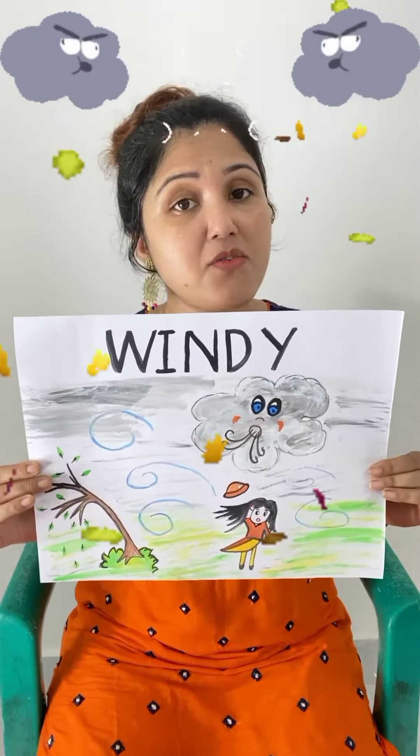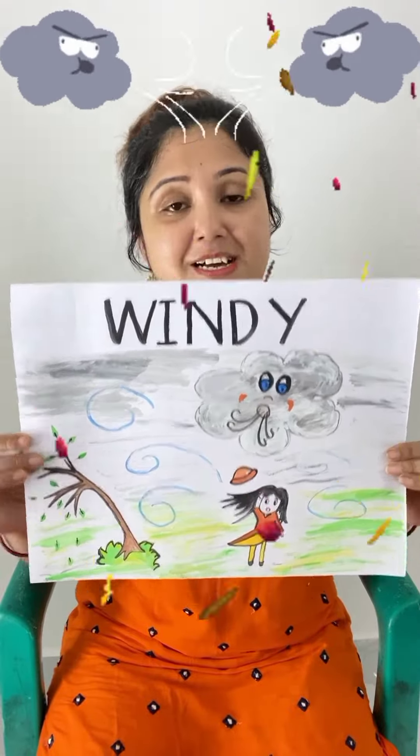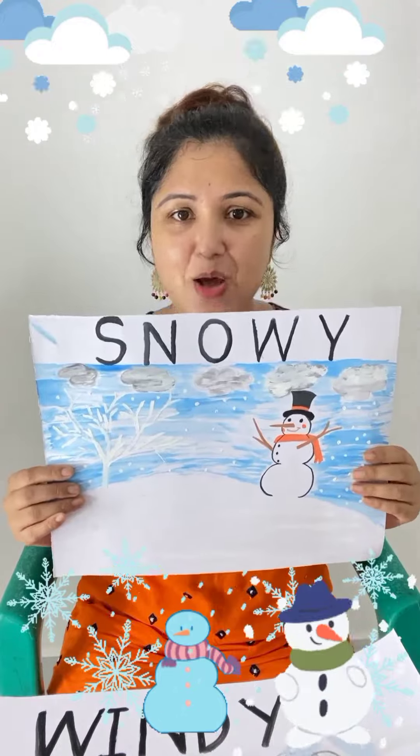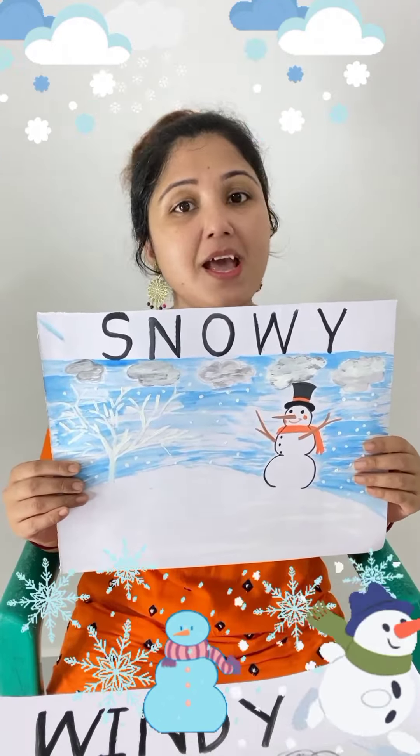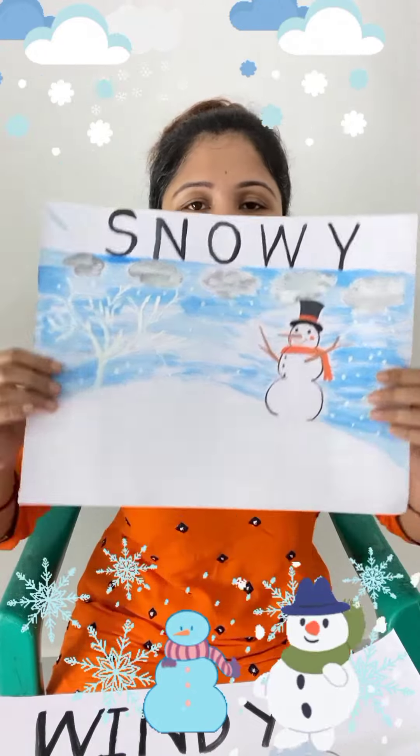Next is windy. What is the spelling of windy? W-I-N-D-Y, windy. Children, on a windy day, wind blows very fast and strong. We can fly kites on a windy day. Next is snowy. What is the spelling of snowy? S-N-O-W-Y, snowy. So children, there are five kinds of weather. You have to learn all the names, right?